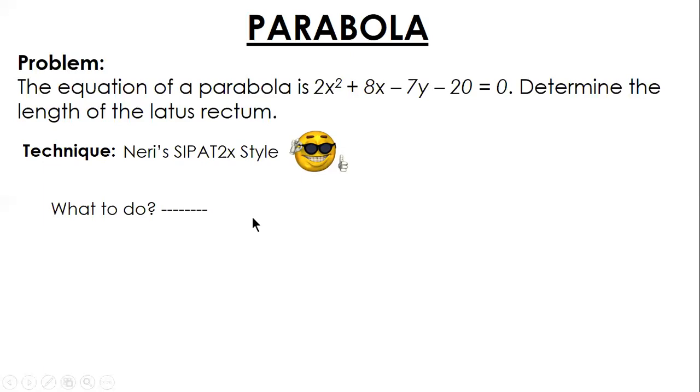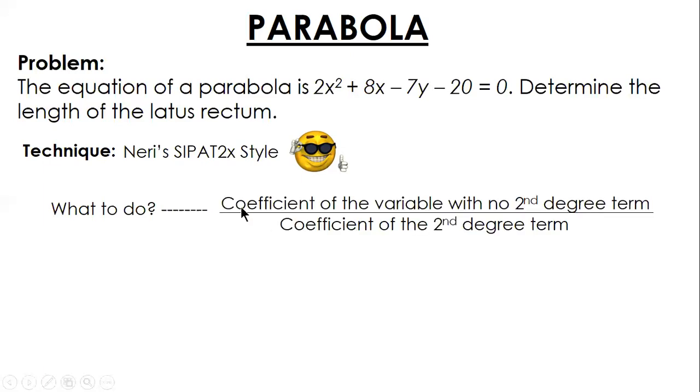This is what you're going to do: you just divide the coefficient of the variable with no second degree term. For this problem, y is the variable with no second degree term. So the coefficient is -7. But actually, you can disregard the sign because the latus rectum is a numerical value. The sign just determines where the parabola opens. So consider the numerical value: 7 divided by the coefficient of the second degree term, 2. So 7 over 2 is 3.5.